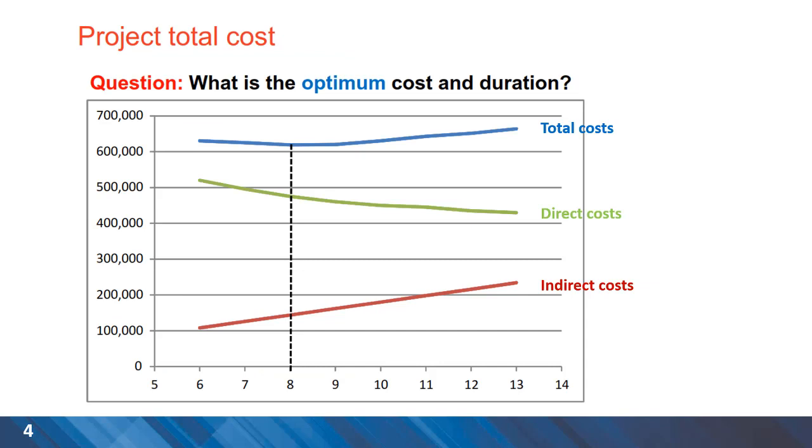Then project direct costs and indirect costs can be plotted and the sum of the two will be the total cost of the project. Obviously we are after minimum total cost for the project which shows us the optimum duration as well.